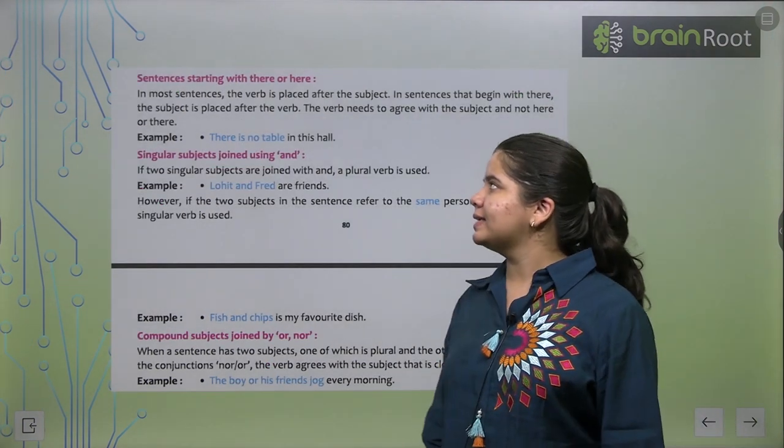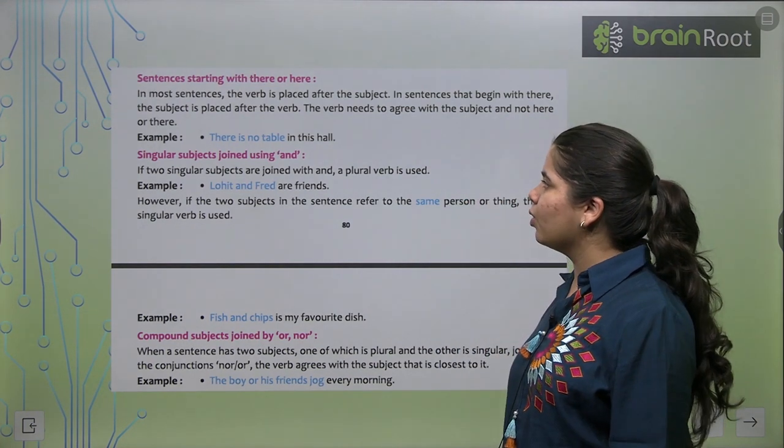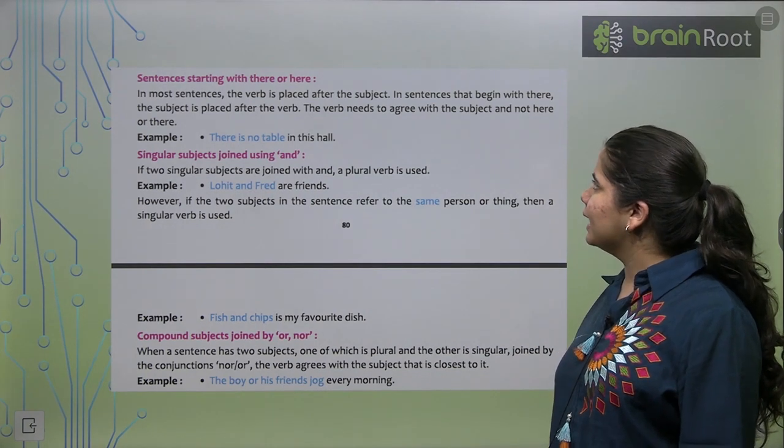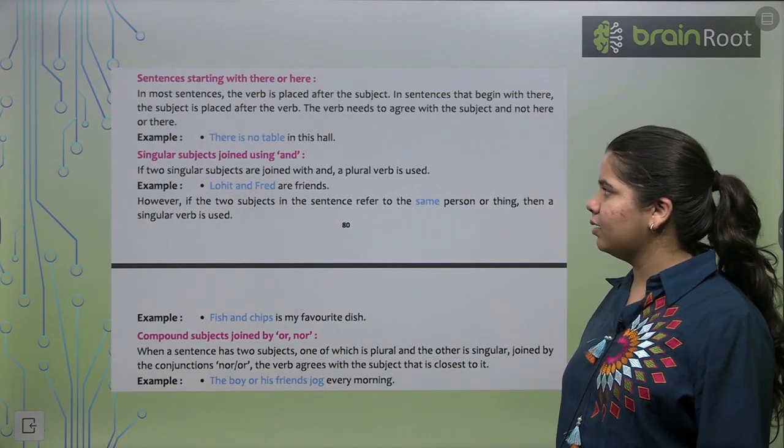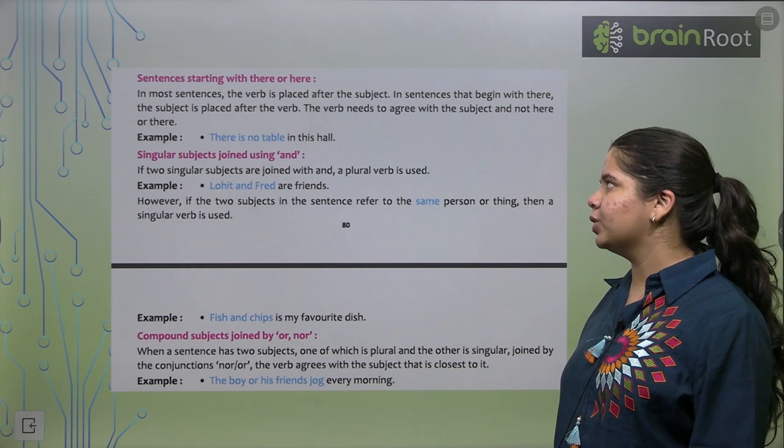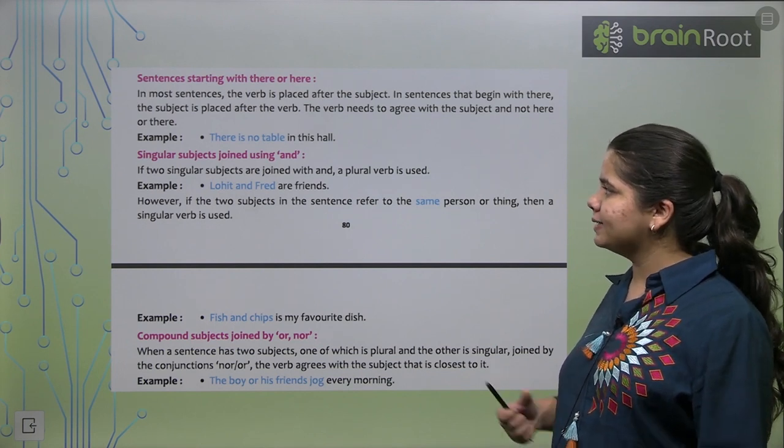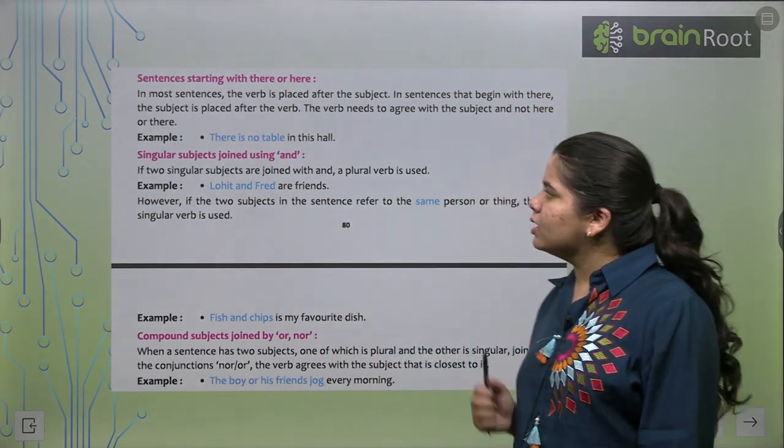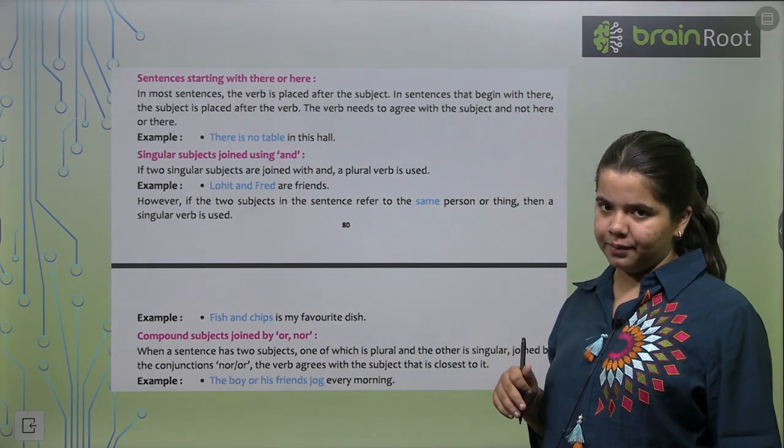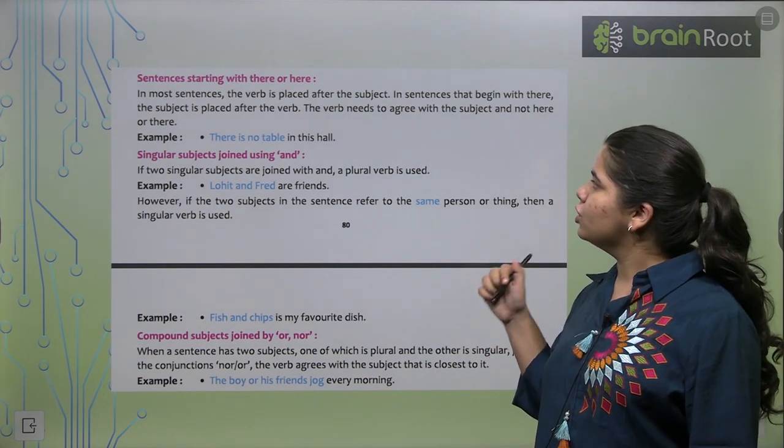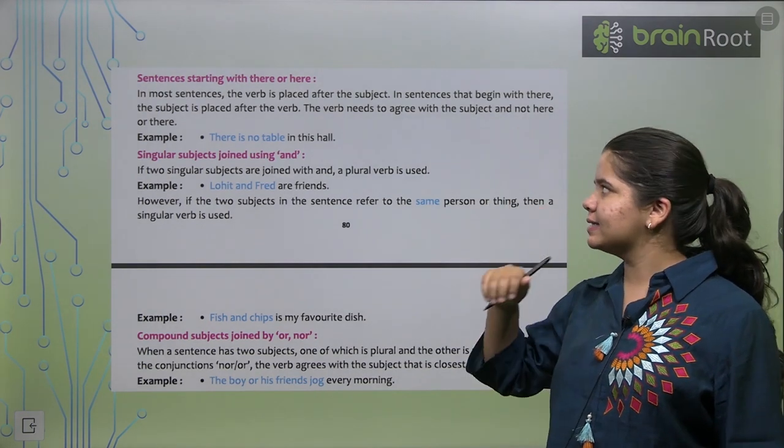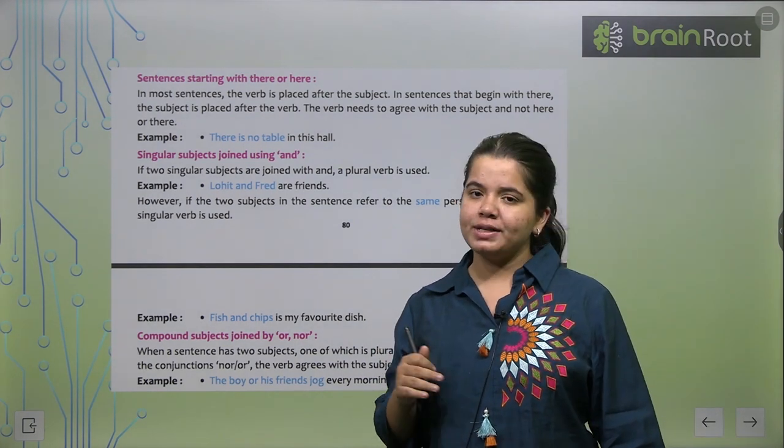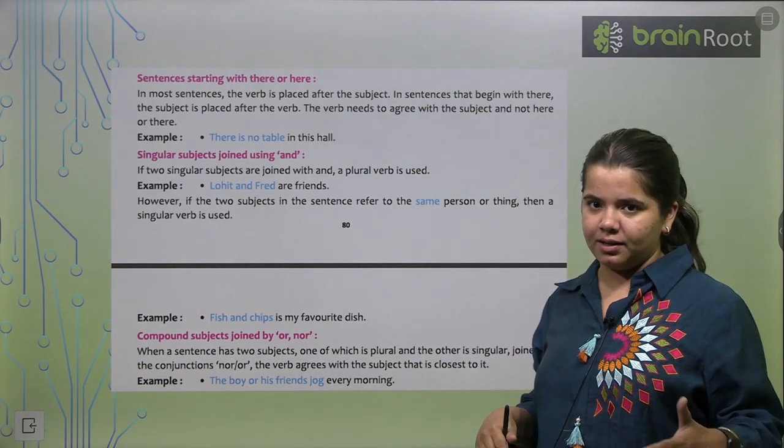Ye kuch exception hai. Aapko ye bhi dhyan rakhna hai. Sentences starting with there or here. In most sentences, the verb is placed after the subject. In sentences that begin with there, the subject is placed after the verb. Iske andar, sentence mein, there is no table in this hall. Subject ke saath ye start nahi ho raha hai. There ke saath start ho raha hai.